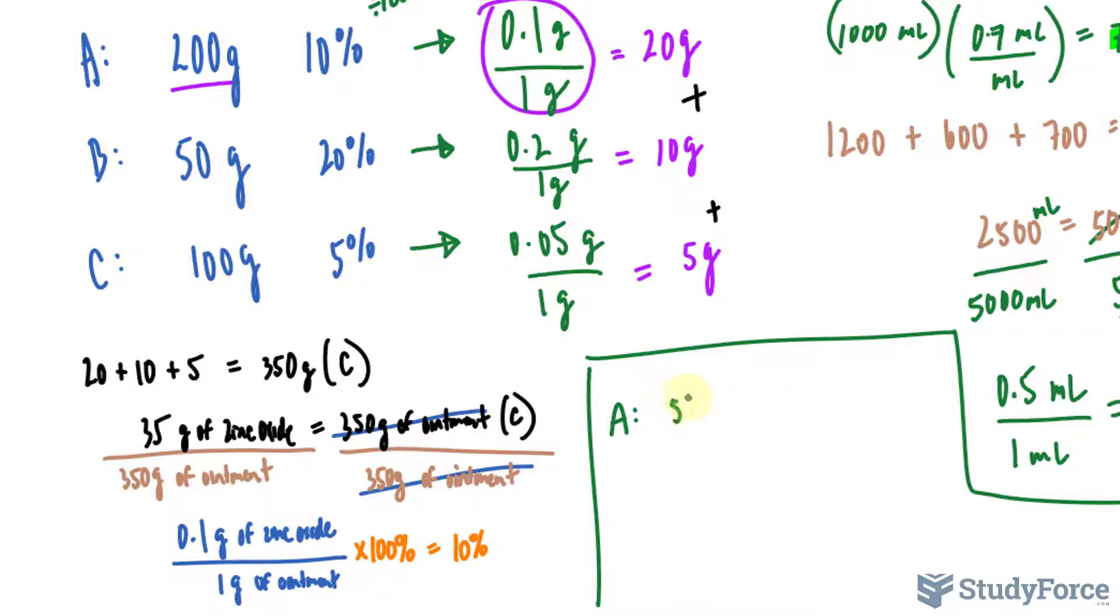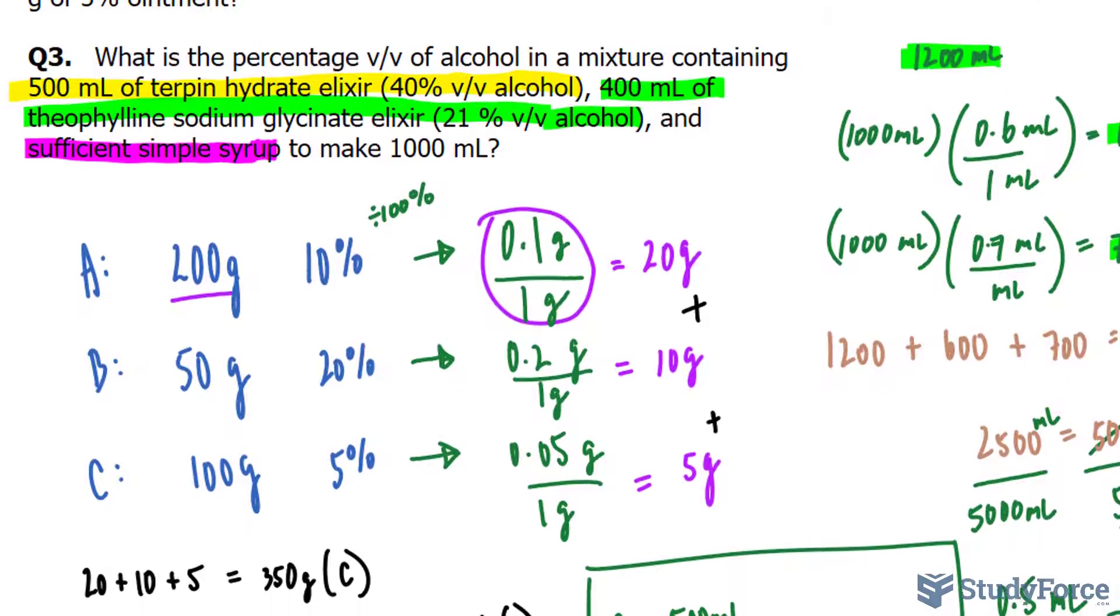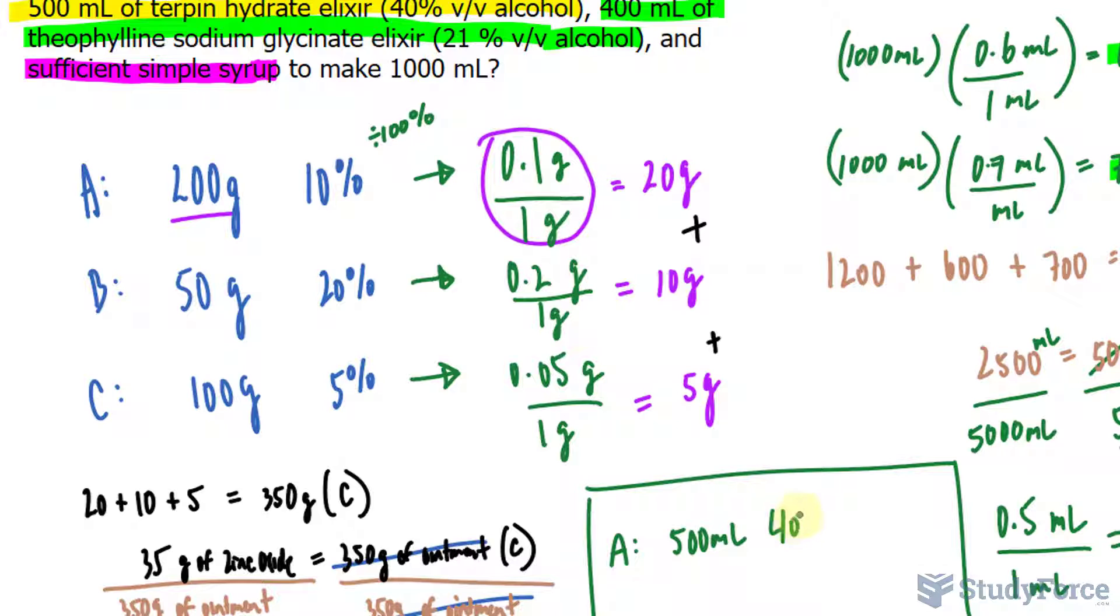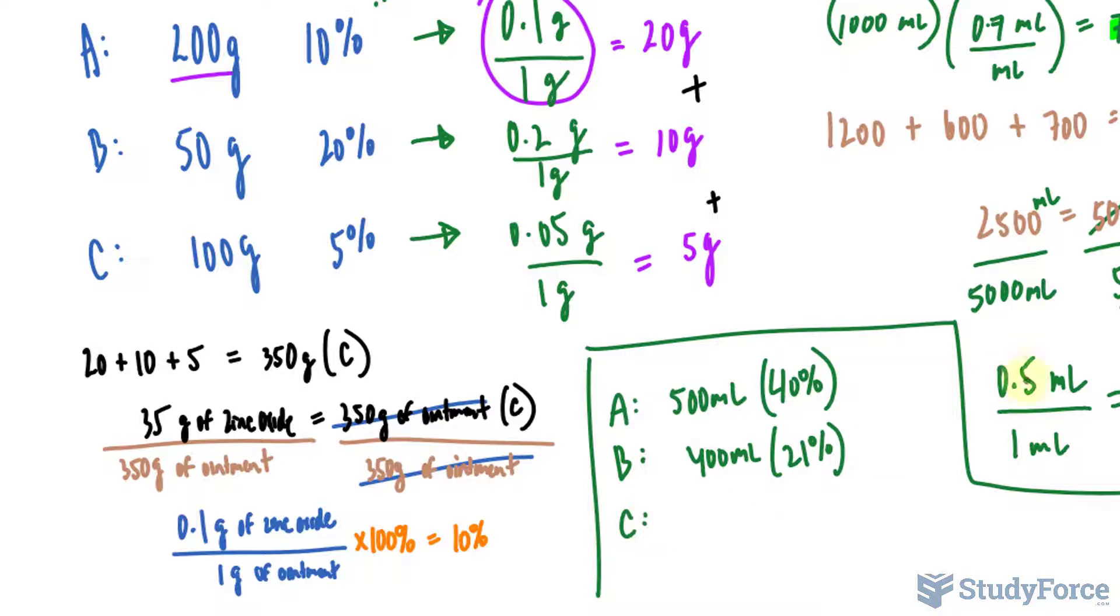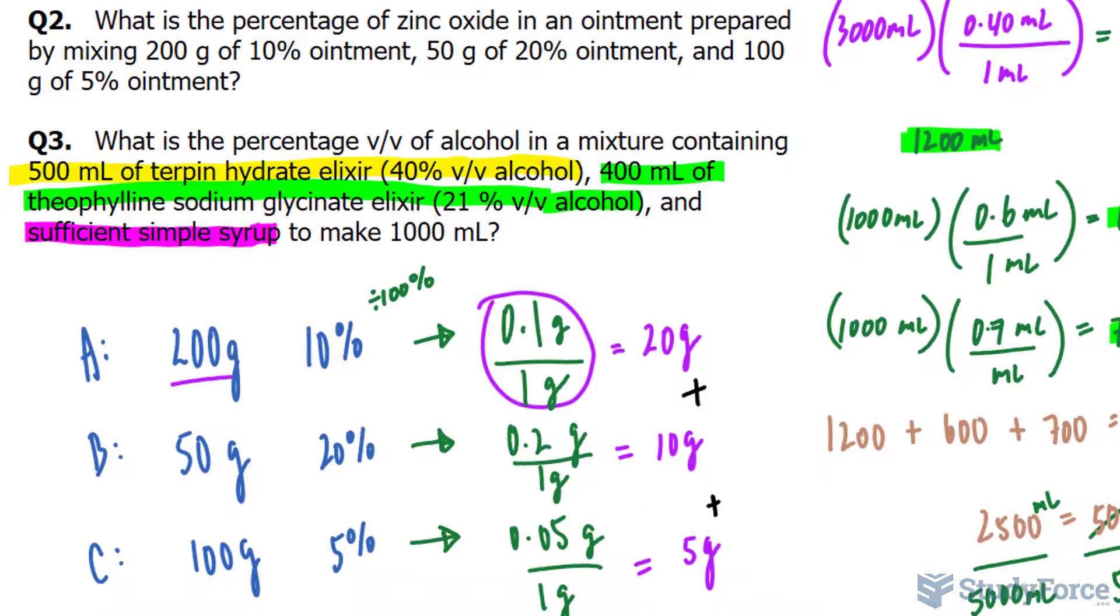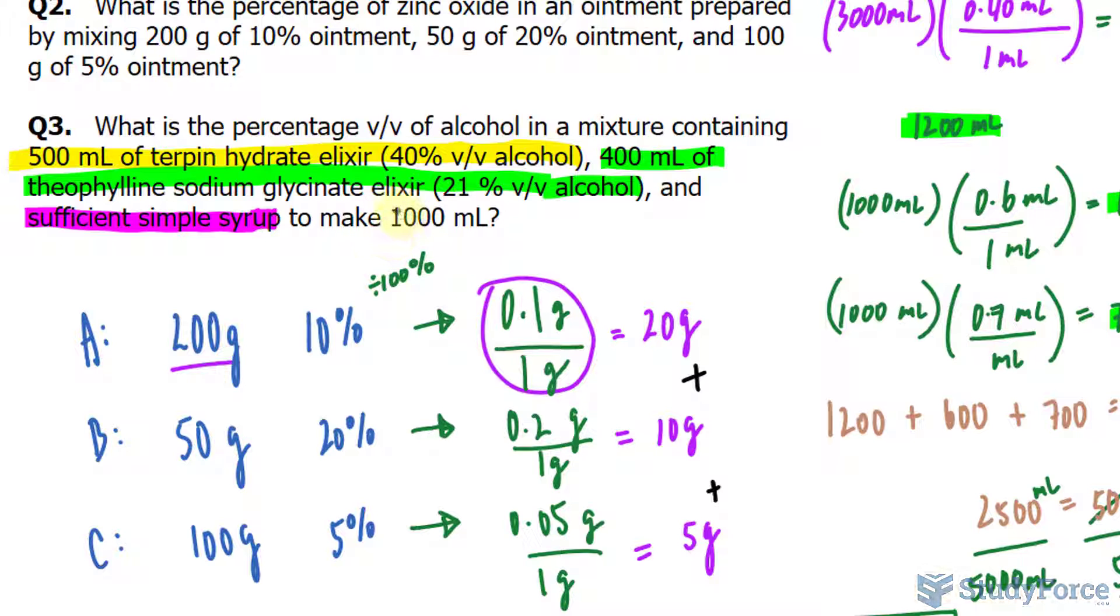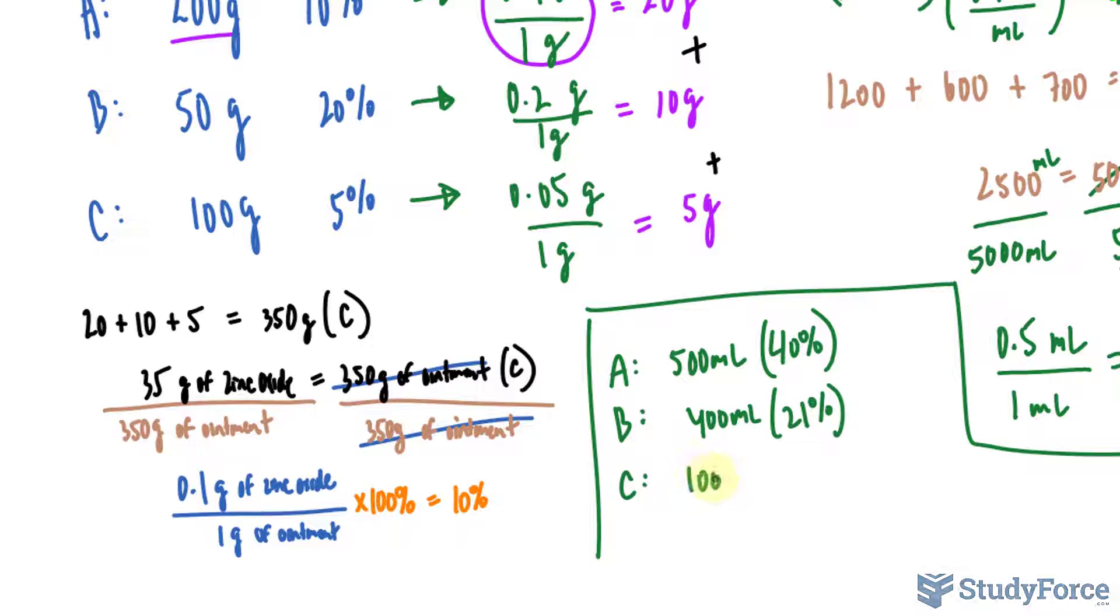Let's write this information down. We have part A, part A is 500 milliliters, and it is 40%. Part B is 400 milliliters, and it is 21%. Part C is 100 milliliters, because the difference between 1,000 and these two summed up makes 100. 100 milliliters of simple syrup, and it has a percentage of zero. What we will do is multiply 500 by 0.4, 400 by 0.21, and 100 by zero, which makes zero.